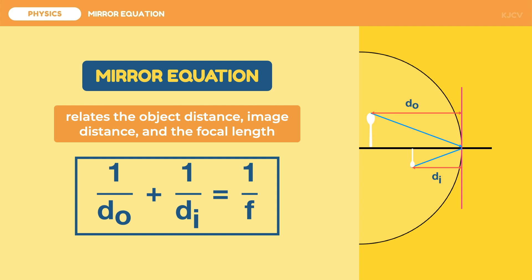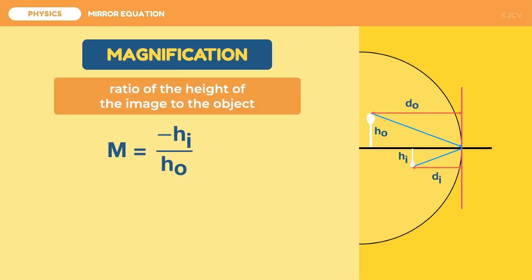Aside from this, we can also compute for the magnification of the image. Magnification is defined as the change in size of the image relative to the object. We denote the object height as H sub O and the image height as H sub I. We have again created similar triangles with the heights as the triangle base, giving us the magnification formula. The magnification is equal to the ratio of the image height and the object height. Note that when the image is inverted, the image height is negative. The image and object height ratio can also be used to describe the ratio of the image distance and the object distance, and we can also write the formula multiplied by negative 1.